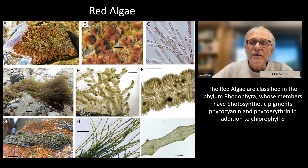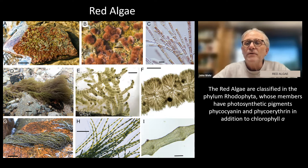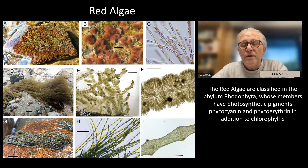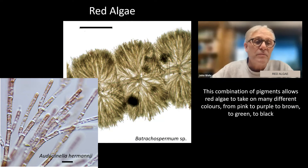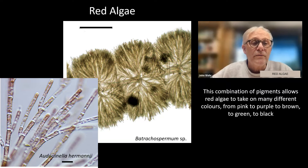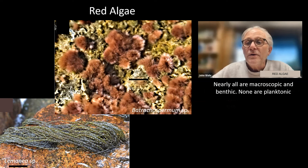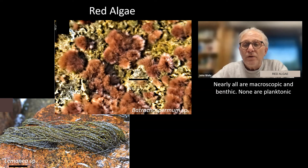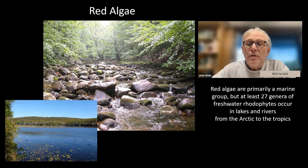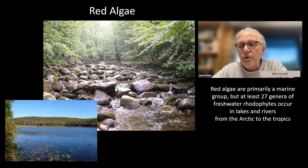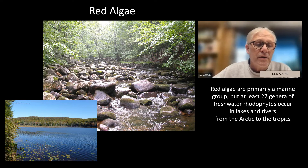The red algae are classified in the phylum Rhodophyta, whose members have photosynthetic pigments phycocyanin and phycoerythrin, in addition to chlorophyll A. This combination of pigments allows red algae to take on many different colors, from pink to purple to brown to green to black. Nearly all are macroscopic and benthic; none are planktonic. Red algae are primarily a marine group, but at least 27 genera of freshwater rhodophytes occur in lakes and rivers from the Arctic to the Tropics.